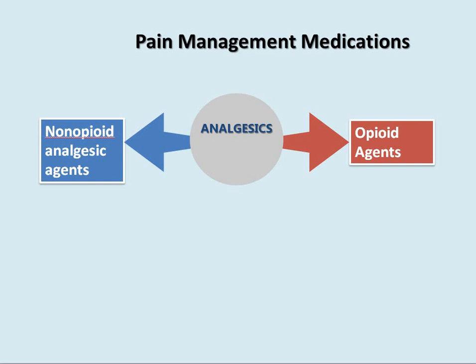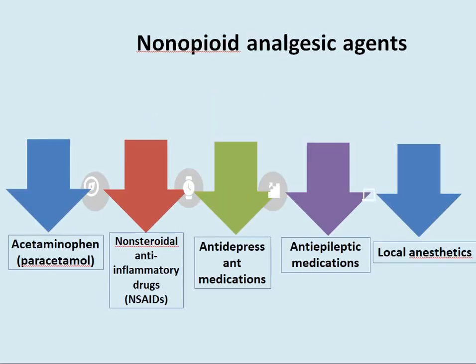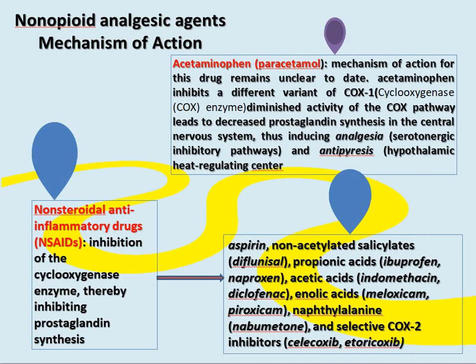Analgesics include non-opioid analgesic agents and opioid agents. Non-opioid analgesic agents can be classified into five components: acetaminophen/paracetamol, non-steroidal anti-inflammatory drugs (NSAIDs), antidepressant medication, anti-epileptic medication, and local anesthetics.